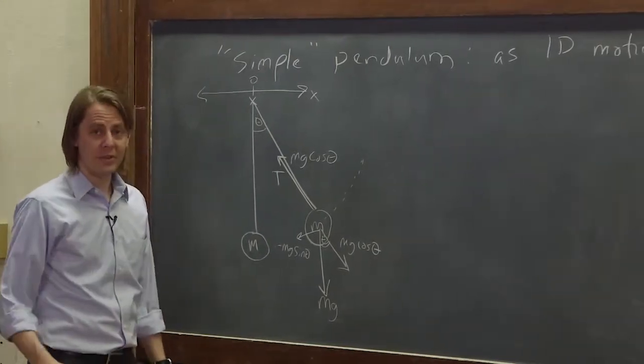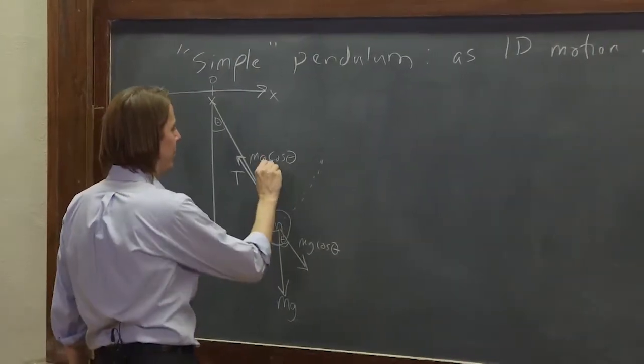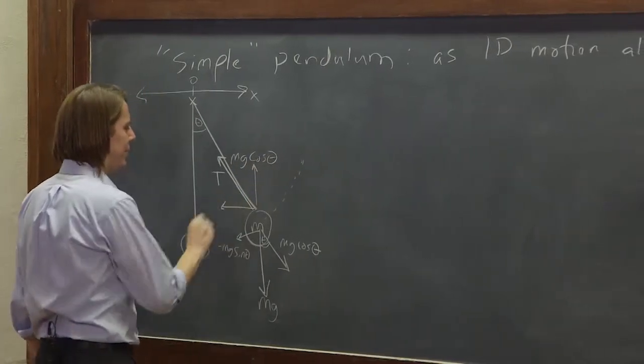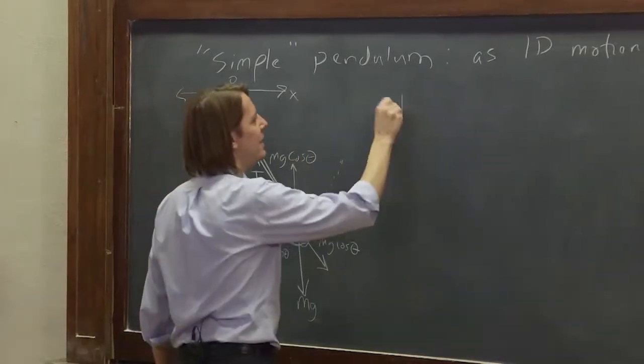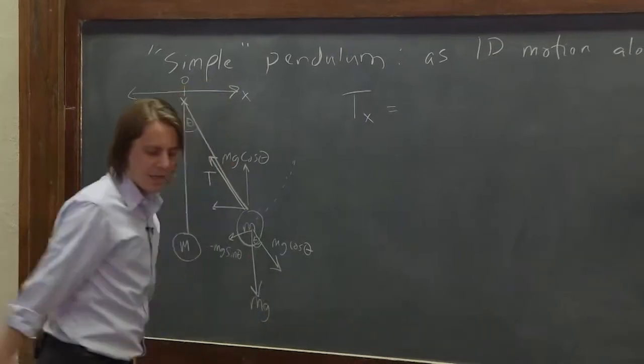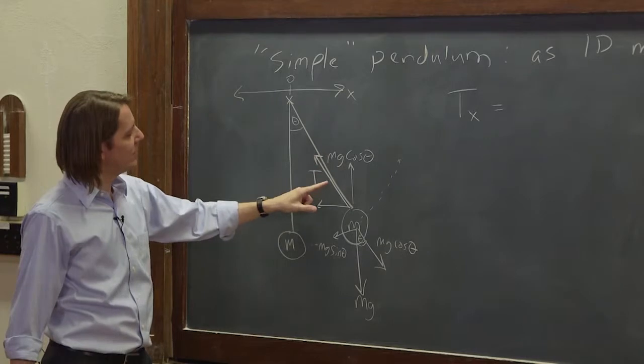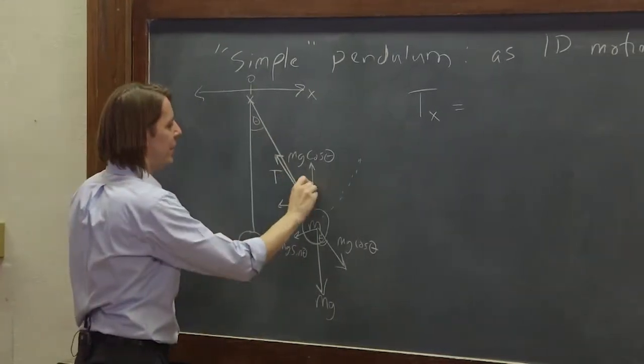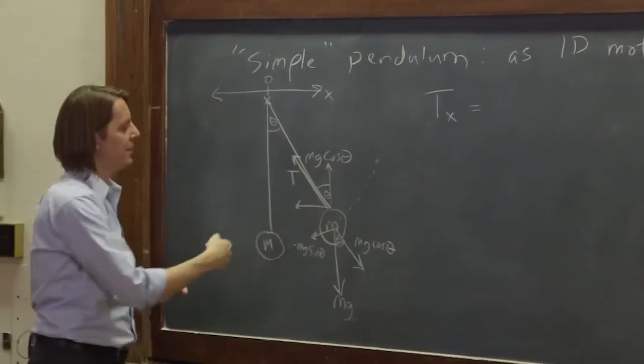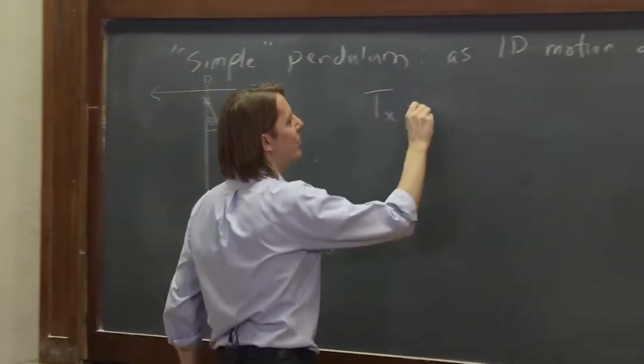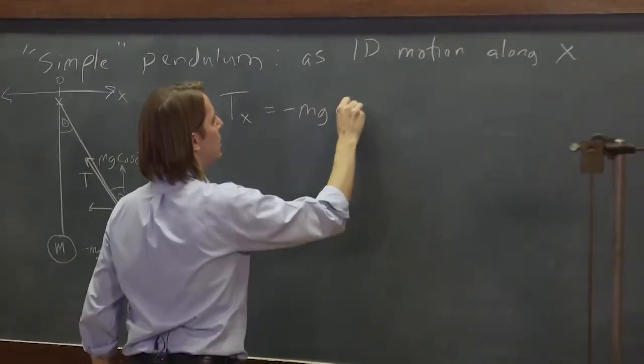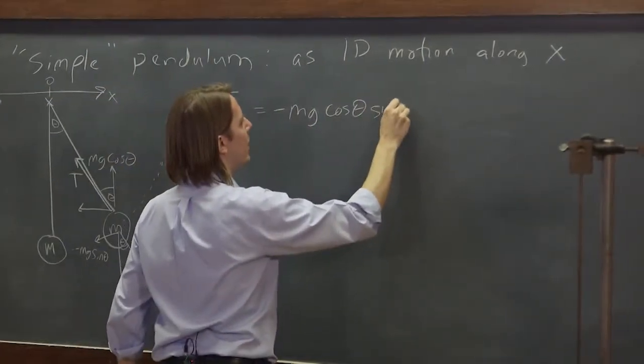Well, we can further break the tension into a y component and an x component. So really, we want Tx. And Tx is going to be this mg cosine theta, and then we need the sine component of that. So here's this angle, and there's that angle, and it's again negative. So it's actually the x component is minus mg cosine theta sine theta.